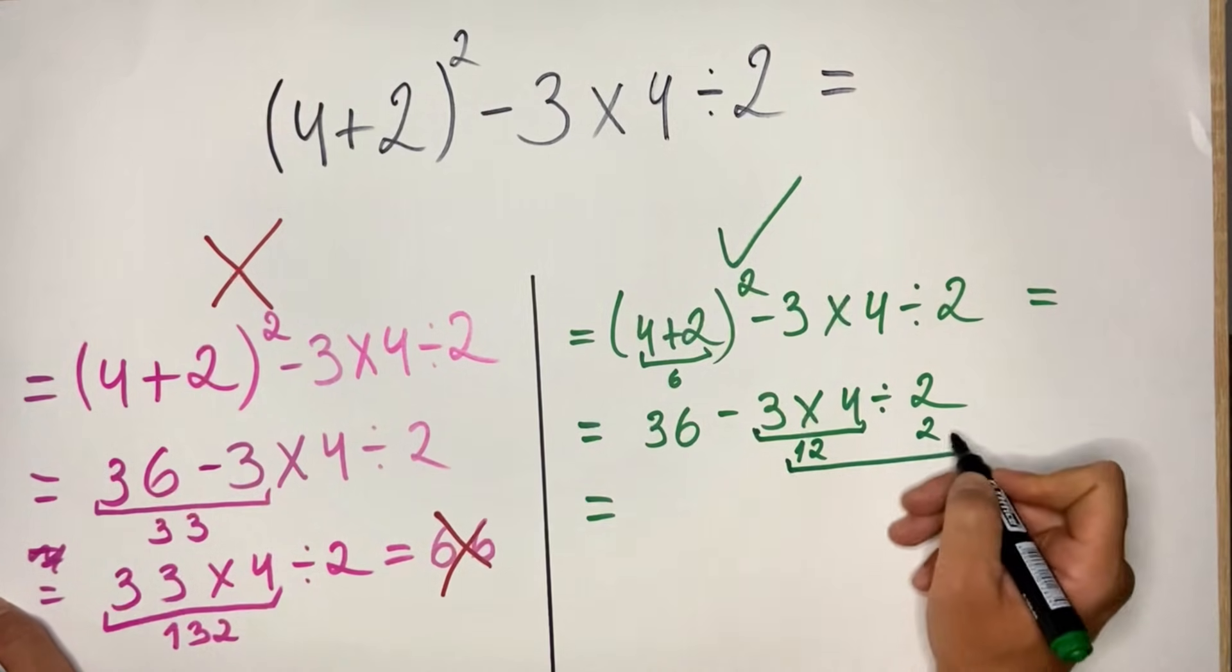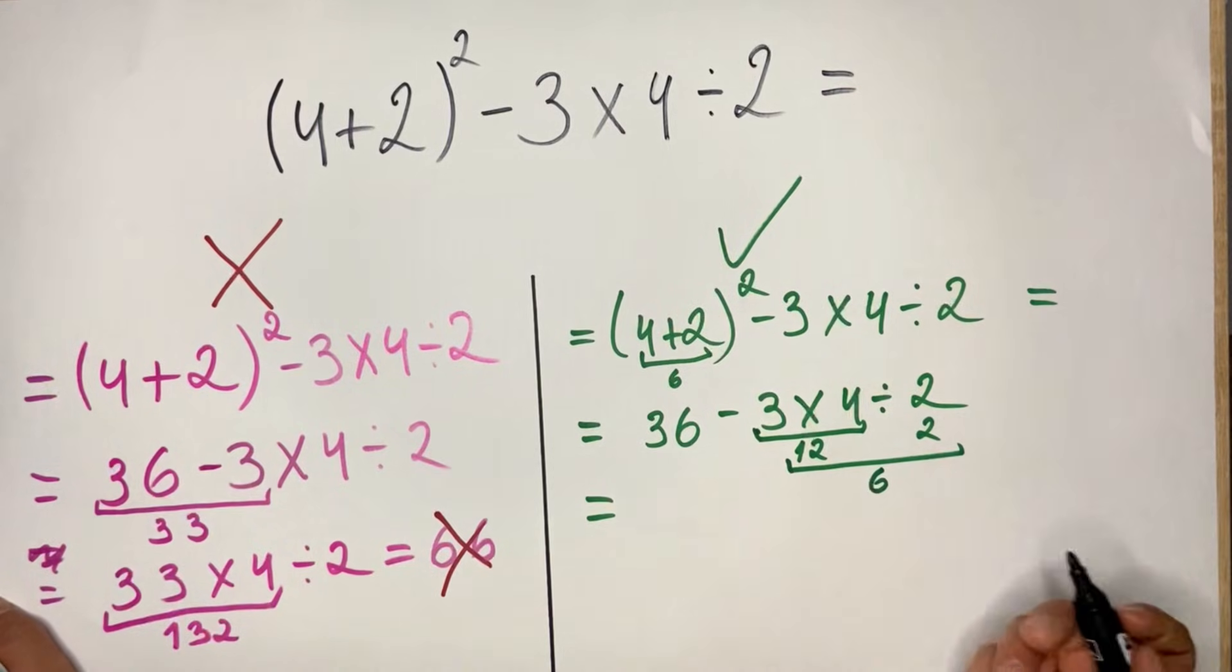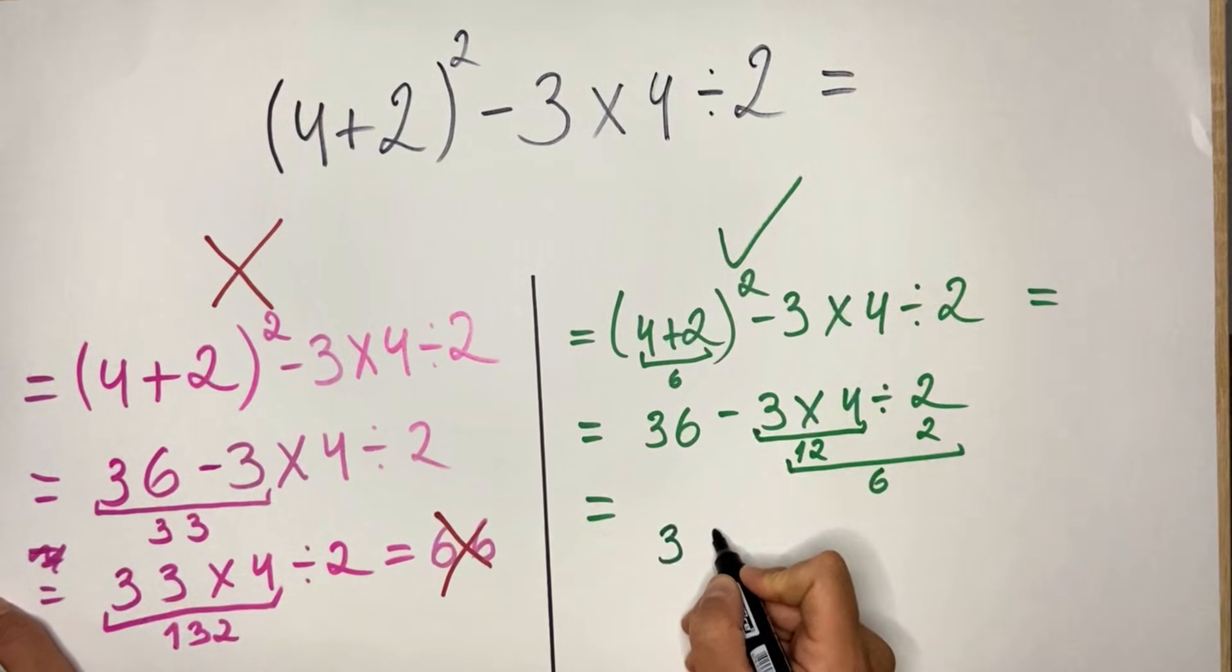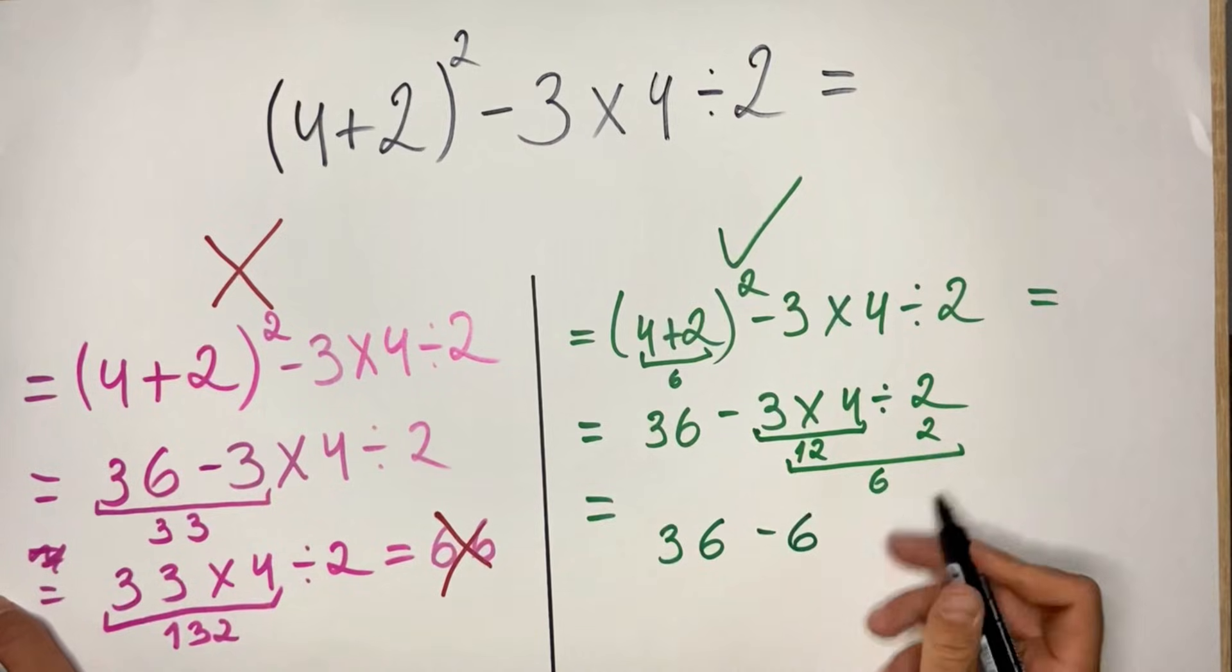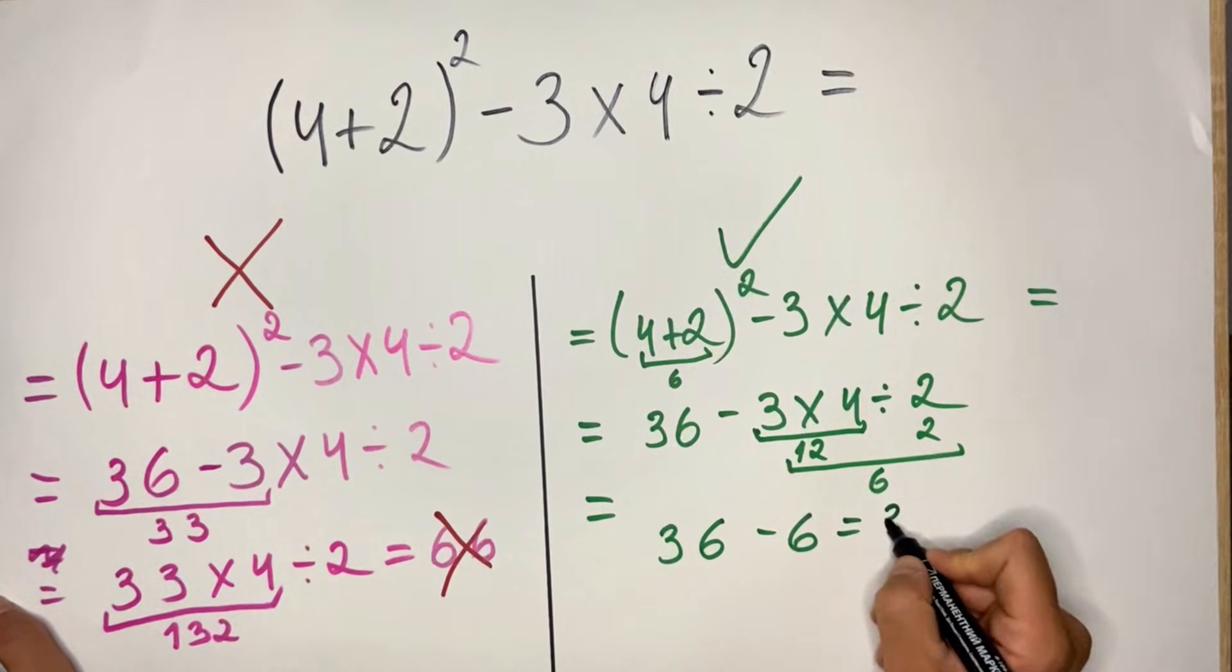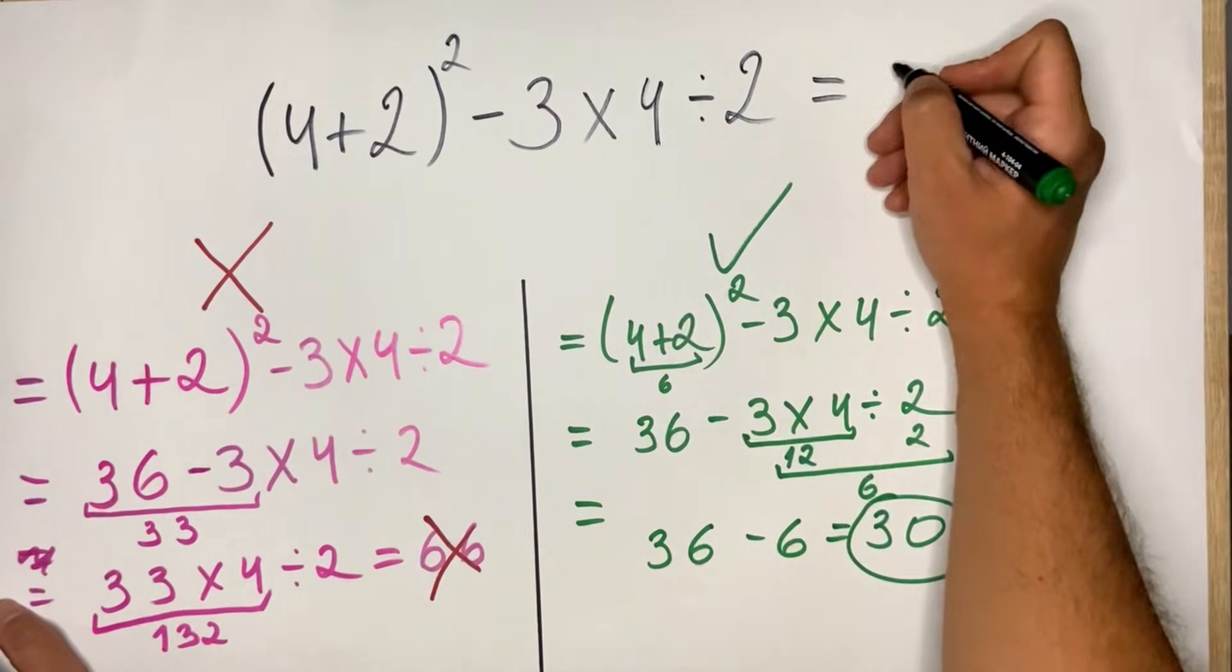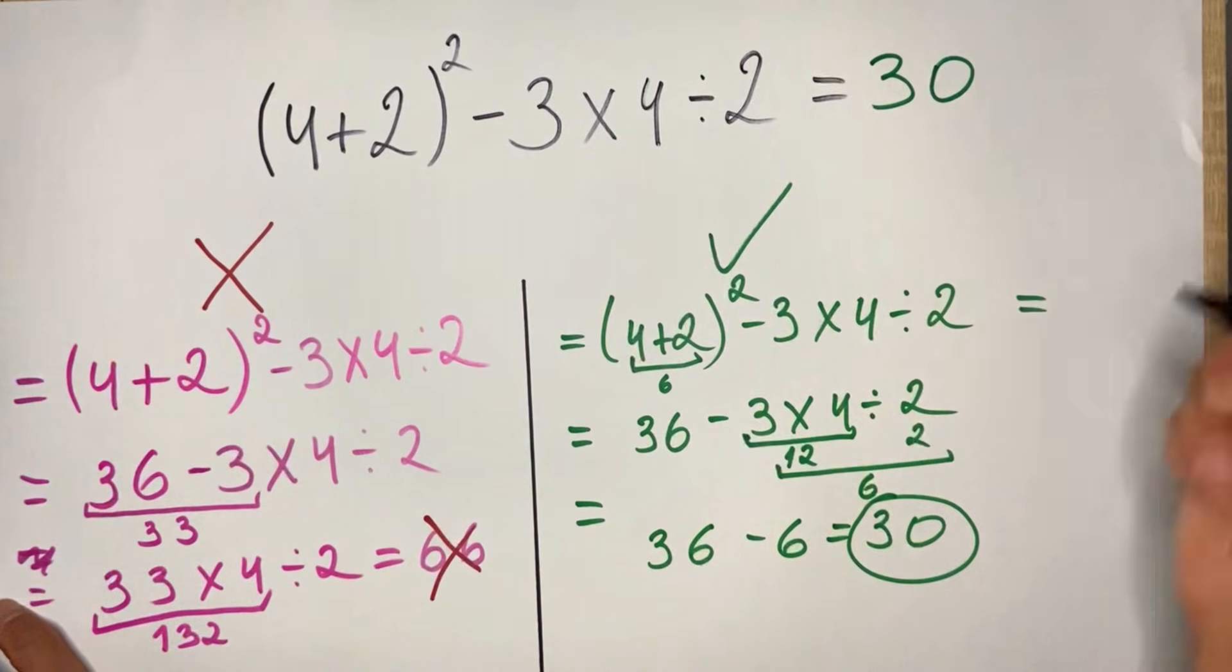So we have 36 minus 6, which equals 30. And of course, this is the correct answer.